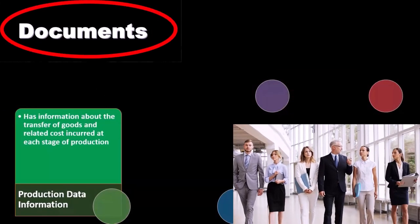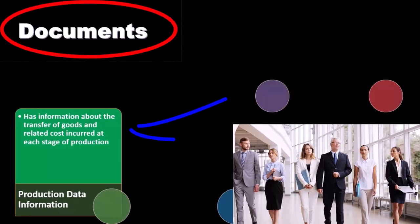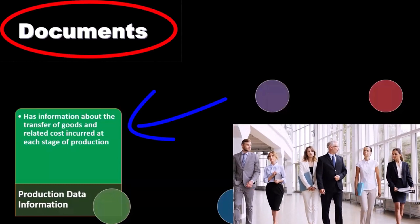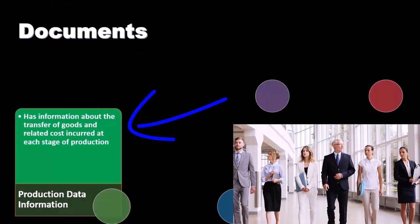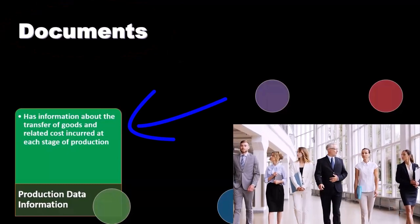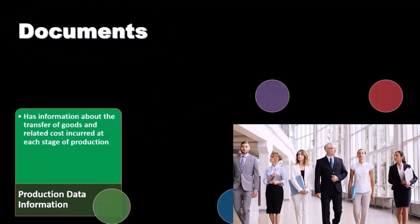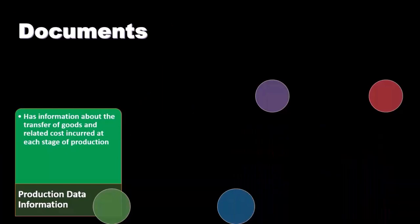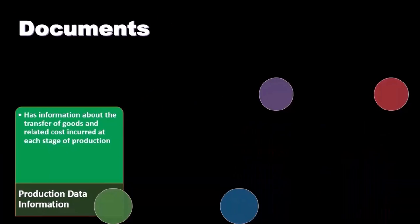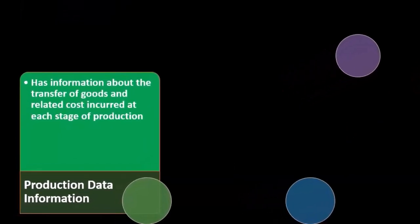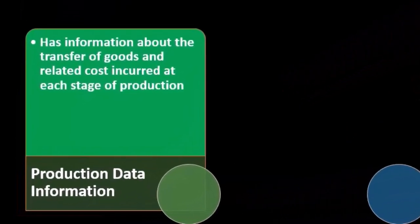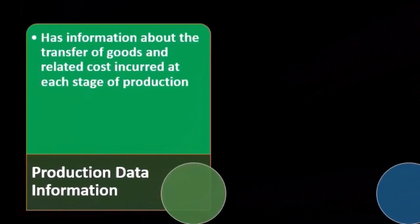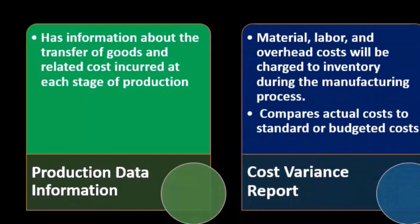Production data has information about the transfer of goods and related costs incurred at each stage of production. So as we think about producing inventory, production data tracks the transfer of goods and related costs at each stage of the production level.